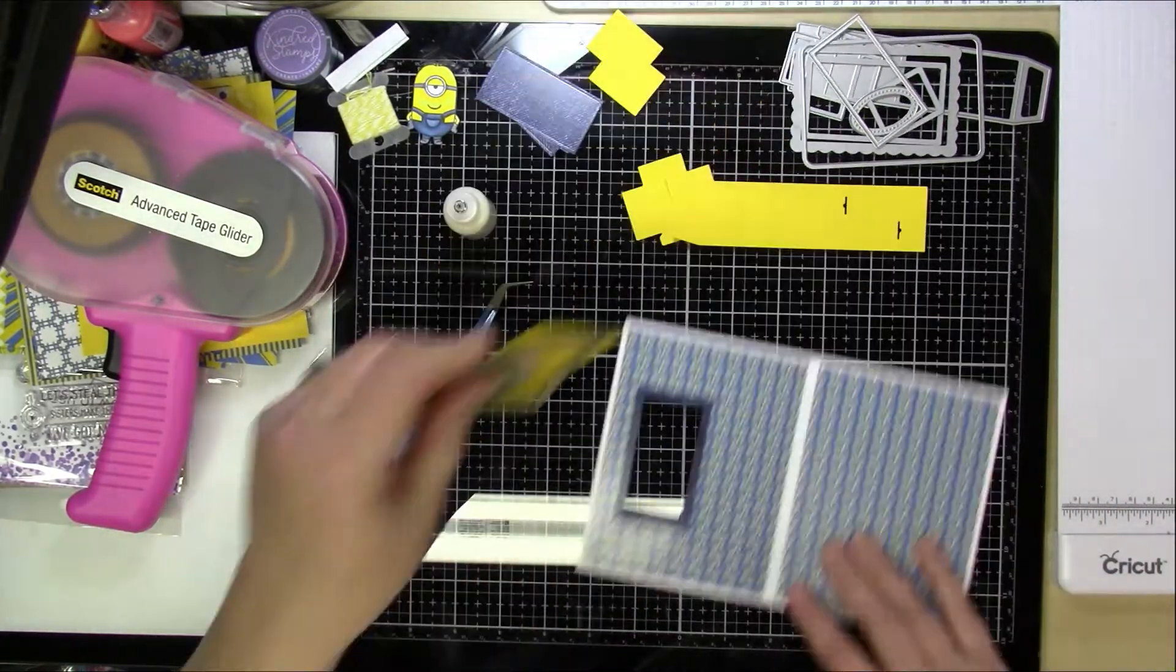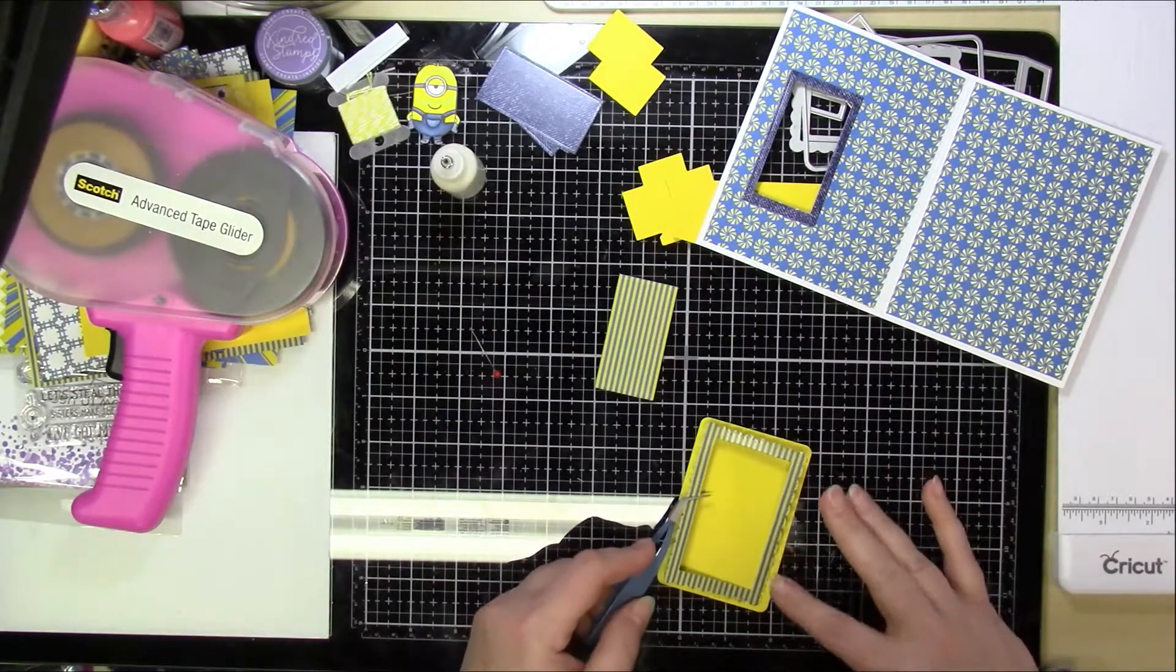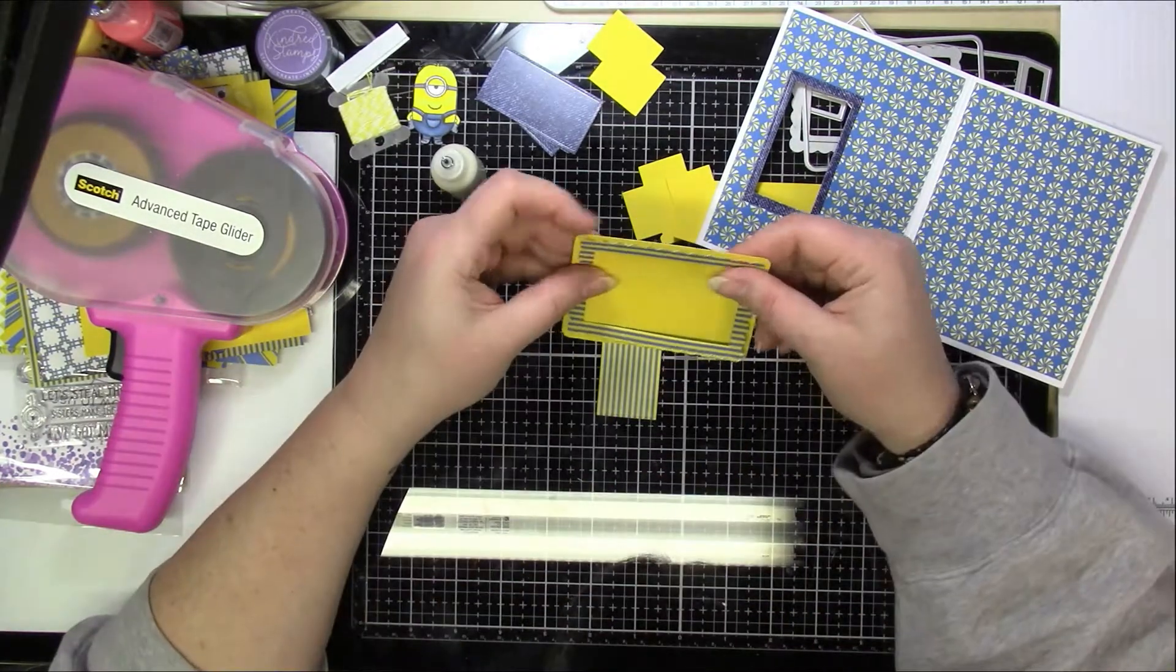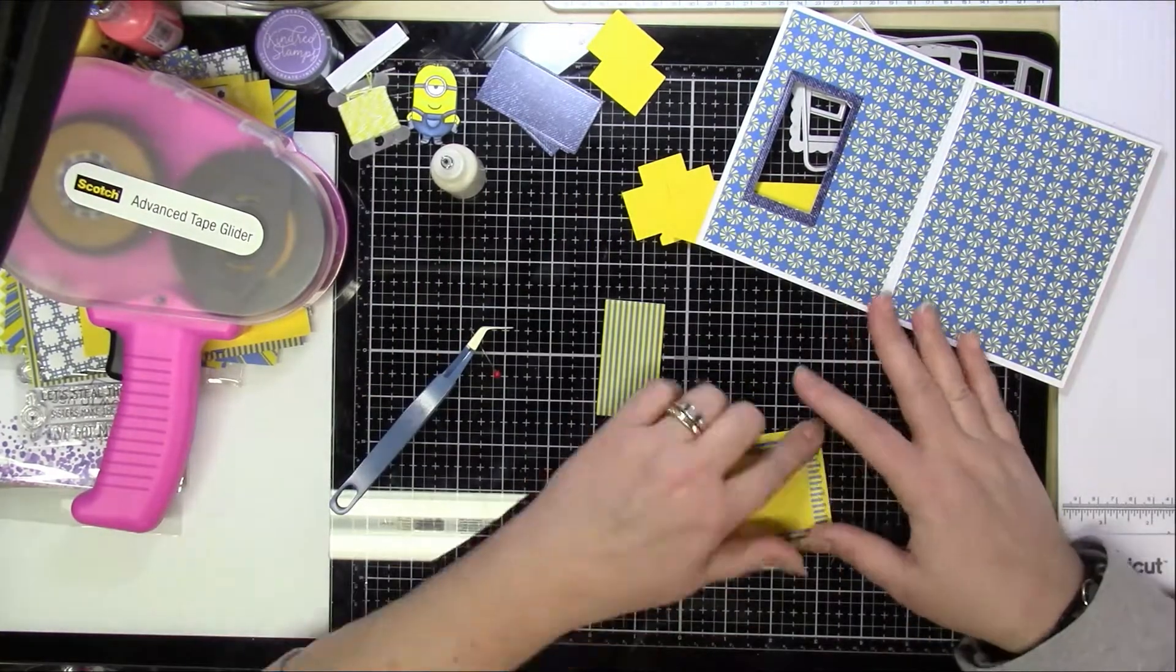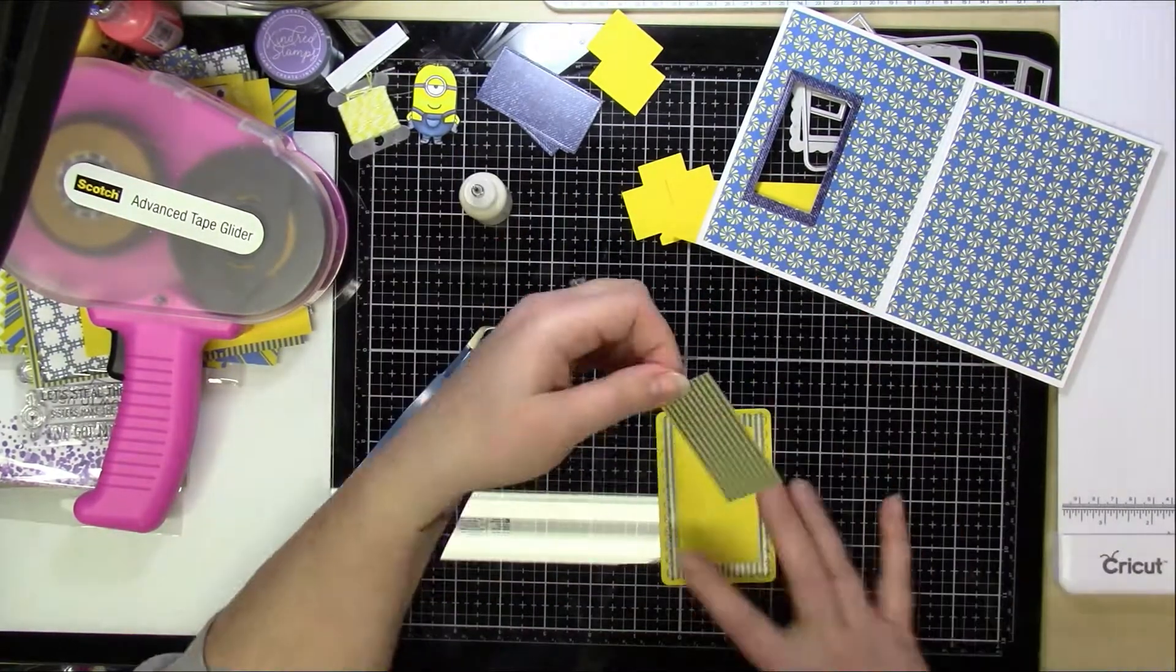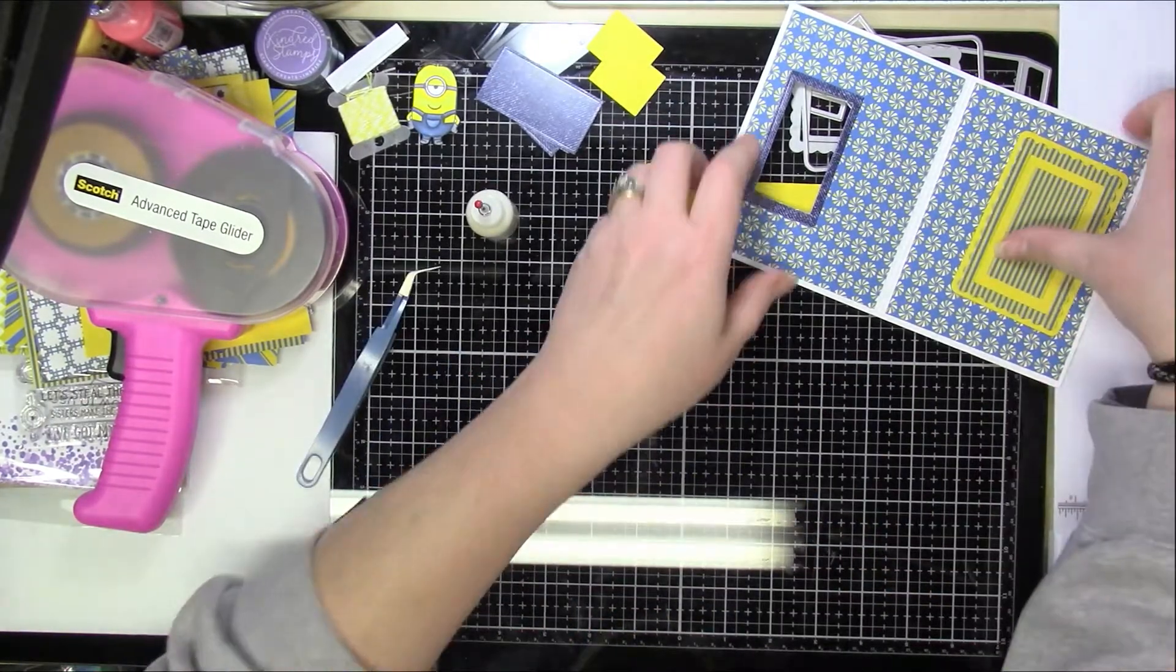And one tip I will give you, this is really thick especially with all of those layers. So when I ran it through my die cut machine, it did not cut all the way through. So I actually peeled off the pieces that it did cut through, placed it back on exactly over the top of it, and ran it through again so that it could cut all the way through.